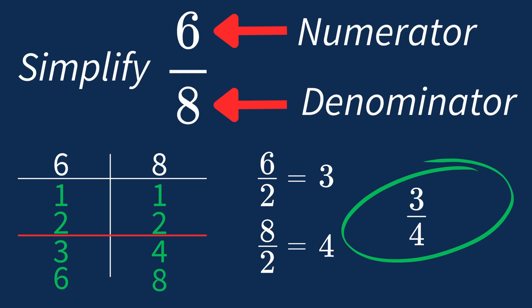And we know that 3 over 4 is in its simplest form because the only common factor between 3 and 4 is 1. And when the largest common factor is 1, we know a fraction is already in its simplest form.